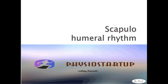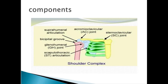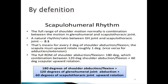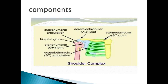Good morning. We are going to look at the scapulohumeral rhythm. First, we will see the components: the sternoclavicular joint, the acromioclavicular joint, the scapulohumeral articulation, the glenohumeral joint, and the scapulothoracic joint. By definition, scapulohumeral rhythm is the full range of shoulder motion, which is normally a combination of motion in the glenohumeral and the scapulothoracic joints.